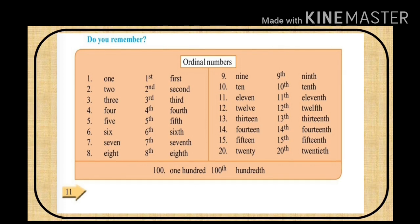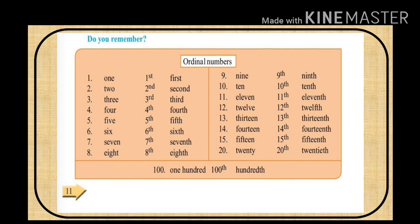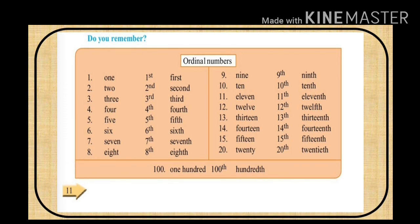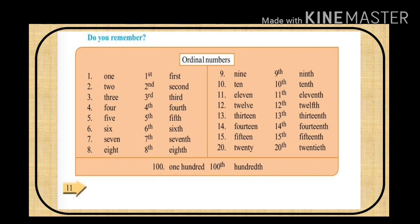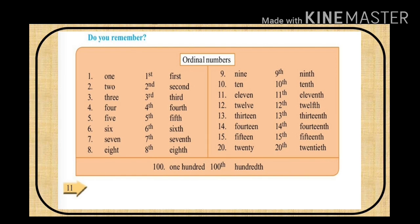1st, 2nd, 3rd, 4th, 5th, 6th, 7th, 8th, 9th, 10th, 11th, 12th, 13th, 14th, 15th, 20th, 100th. Read the Cardinal numbers and Ordinal numbers in this way and write them in your notebook.